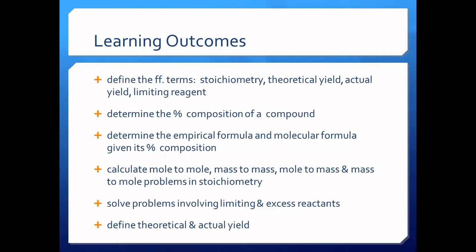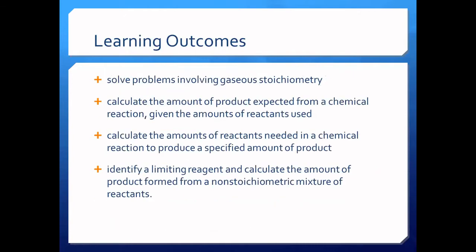It depends really on your reception. We will also determine the theoretical and actual yield — not only defining them in the first learning outcome, but you should be able to calculate the theoretical yield. Most of the time the actual yield is given in the problem. Then we solve problems involving gaseous stoichiometry — chemical reactions involving gases. We're just done with gases. We also calculate the amount of product expected from a chemical reaction given the amounts of reactants used. Before we can do this, if both amounts of reactants are given, there's a need to establish what is the limiting reagent.